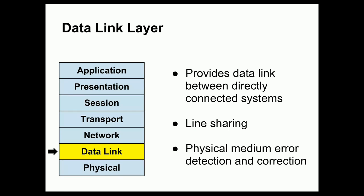Above the physical layer is the data link layer, which provides a link directly between directly connected systems. If we have two systems cabled together with wire or interconnected with fiber optics, the data link layer provides a connectivity mechanism between those two systems at a higher level than the physical layer. This allows a line to be shared between two or more systems, arbitrates who can send at any given time, and performs some physical medium error detection and correction.